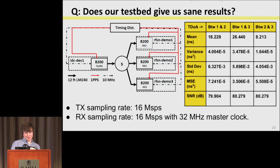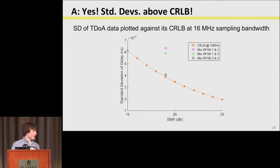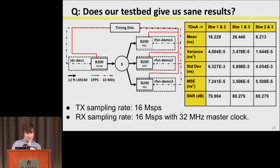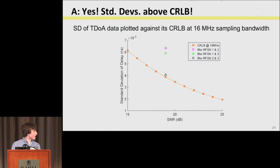We hooked up three receivers to one emitter with no delay, collected TOAs on all of them, and created TDOAs between all three. We've got a variance of about 4×10⁻⁵, and it turns out that is above the Cramér-Rao lower bound for our given sample rate and SNR. Good news — we weren't completely unfounded in what we thought our TOAs were, and everything seems to be checking out so far.